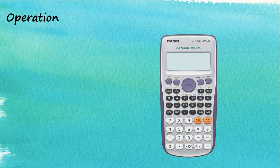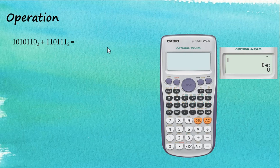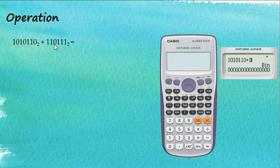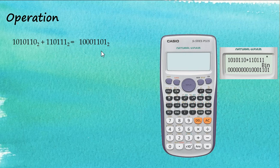Now let's look at operations with numbers of different bases. Starting with addition of two numbers in base 2 (binary). Let's go to binary mode and key in 1010110, then plus 110111. Press equal — the answer is 1001101101 in base 2. That is the addition operation for binary numbers.